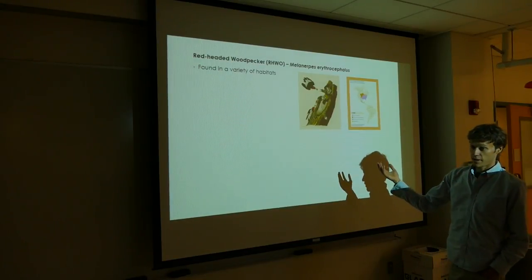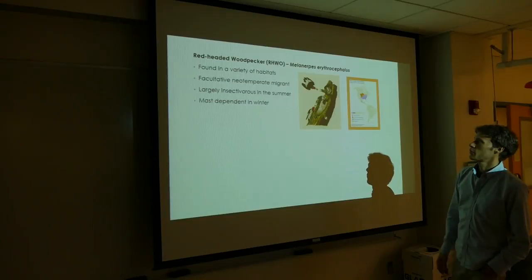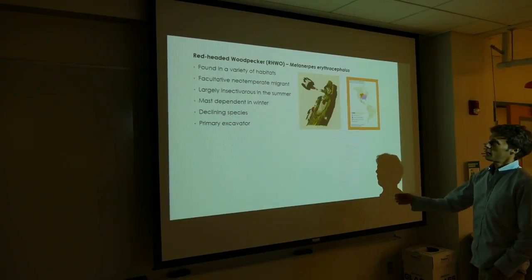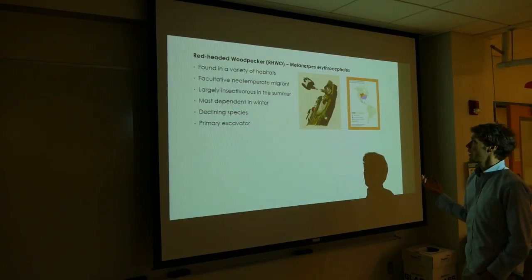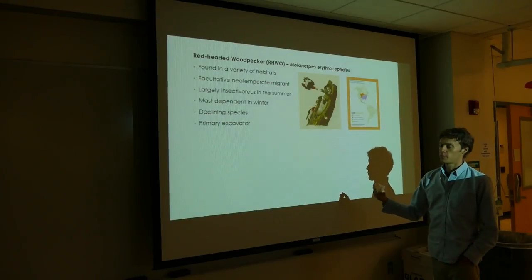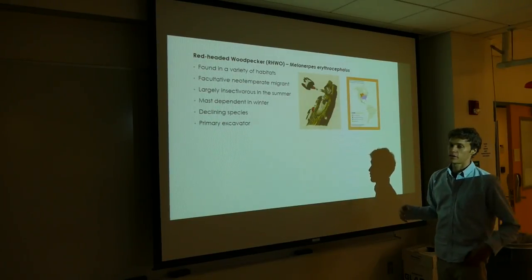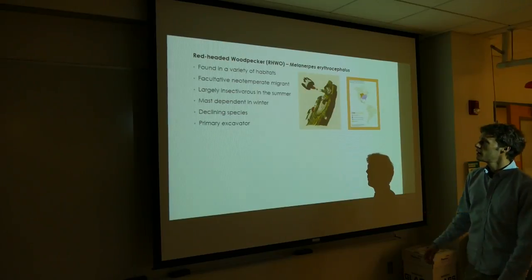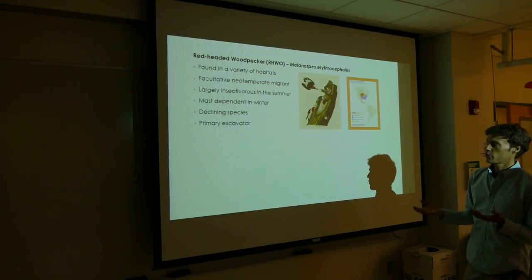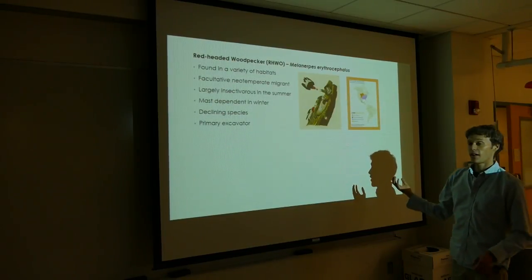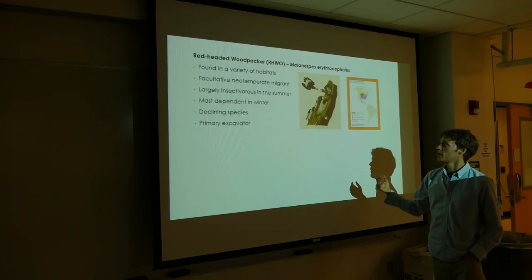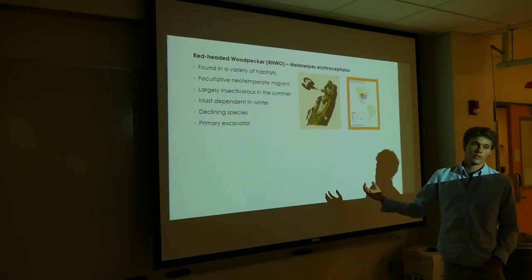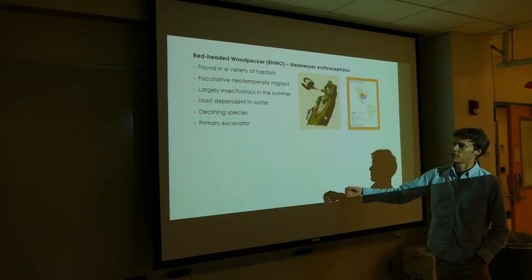It's found in diverse number of habitats. It's a facultative migrant, so it has these seasonal movements, but often, especially in the southeast, it will stay in the same general area. It uses different resources in different seasons, and it's a declining species. It's really important that we know what kind of habitat features are important for this species in different seasons.